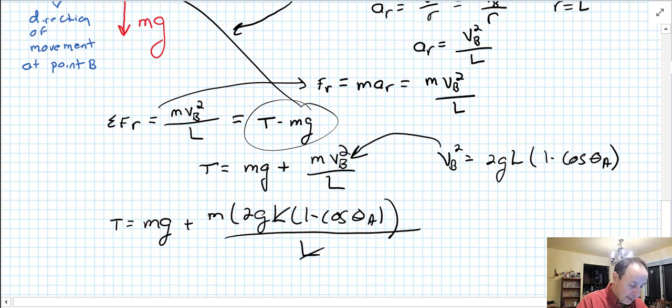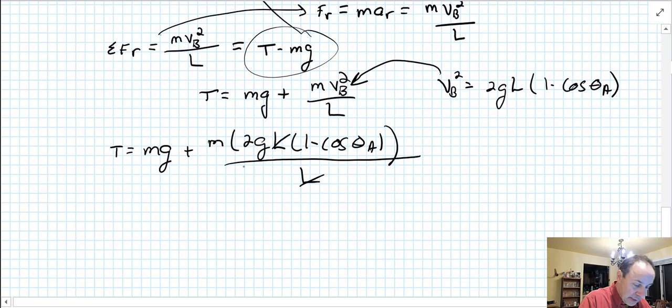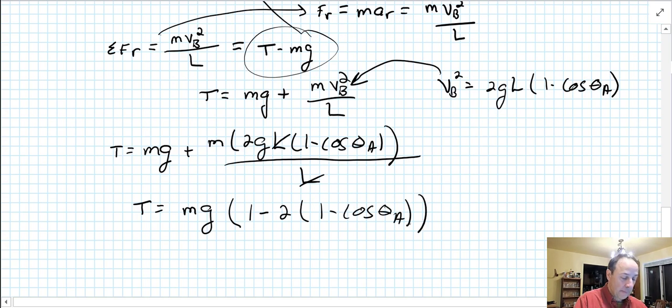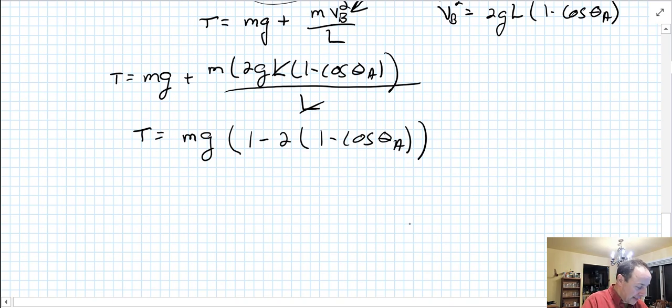Now we see that the L's go away, so the tension equals mass times acceleration due to gravity. And we see we can pull out an mg here, so tension equals mg, let's see, times 1 minus 2 times 1 minus cosine theta A. Do a little algebra there and you end up with the tension is mg times 3 minus 2 cosine theta A.